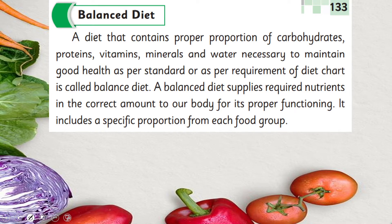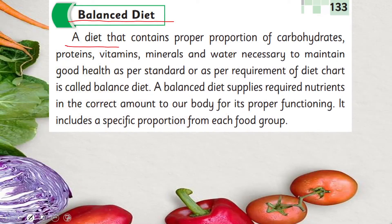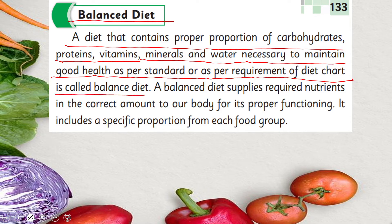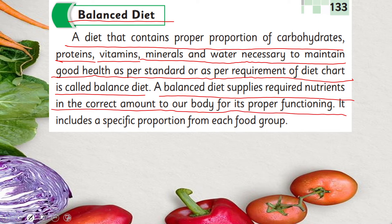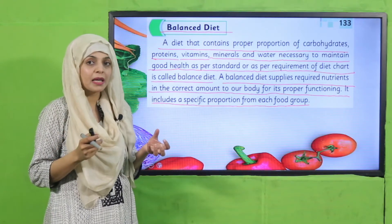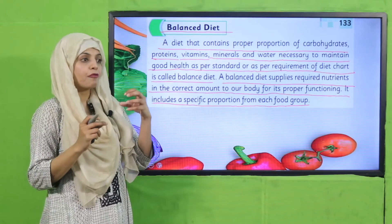Now quickly open page number 133 for your reading. Let's quickly read about balanced diet. A diet that contains proper portions of carbohydrates, proteins, vitamins, minerals and water necessary to good health as per the requirement of the diet chart is called a balanced diet. A balanced diet supplies required nutrients in the correct amount to our body for its proper functioning. It includes a specific portion from each food group. In a balanced diet, items are added from all food groups as per your body's requirement.